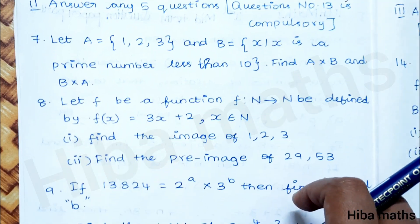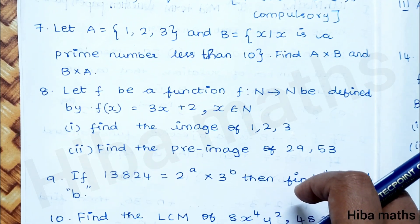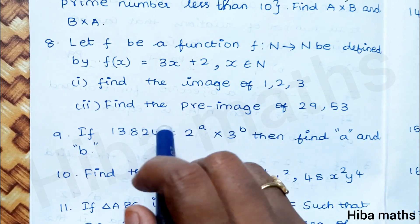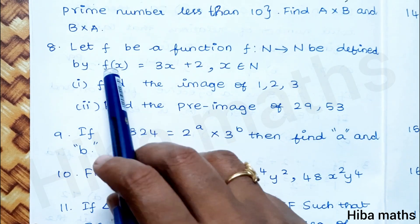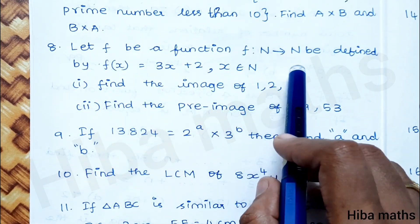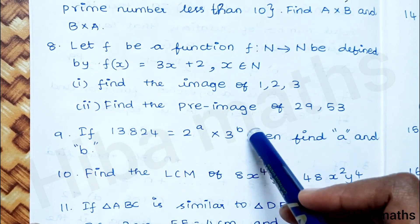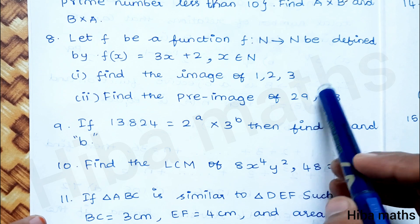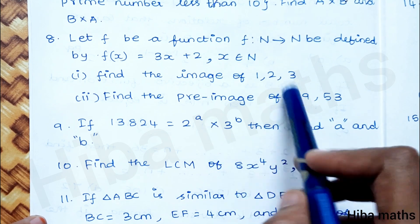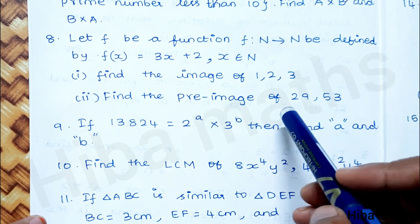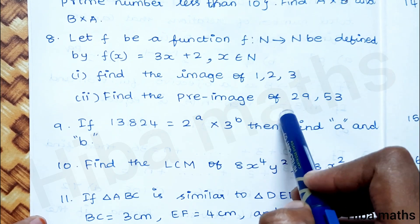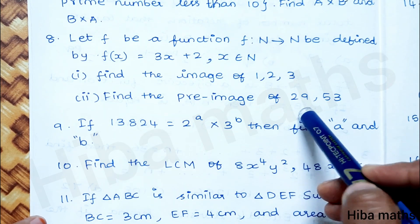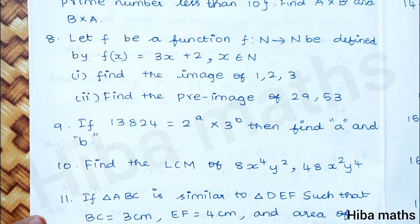First part: find A cross B and B cross A. The eighth question: f of x is equal to 3x plus 2. Find the image of 1, 2, 3 by substituting for the pre-image. We get f of x equal to 29 and 53.